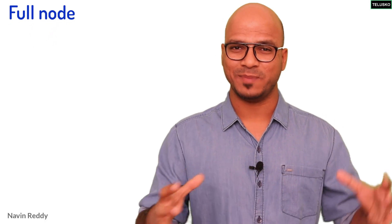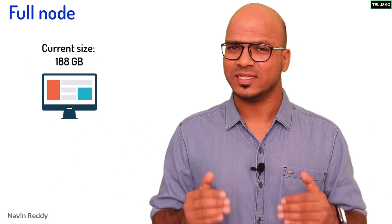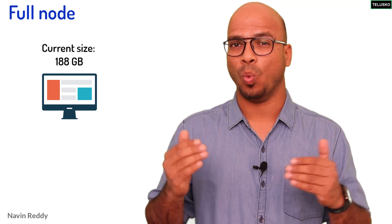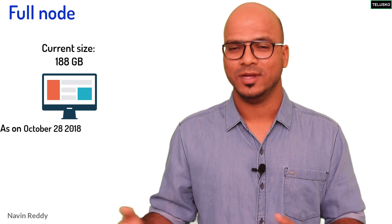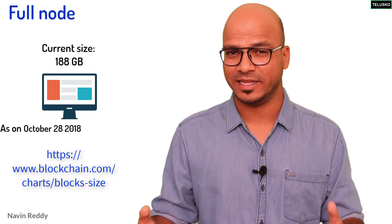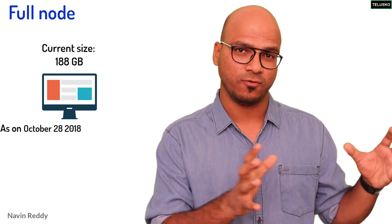Let's talk about full node first. A full node is basically a computer which will have the entire blockchain. The current size of blockchain is 188 GB. I'm talking about today's date which is 28th October 2018. It is 188 GB and every day it is increasing. All this data will be stored on full node.